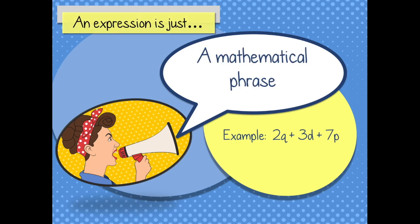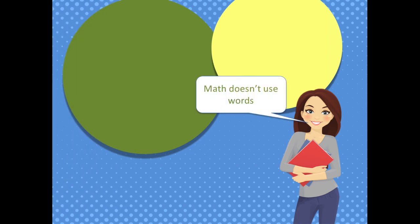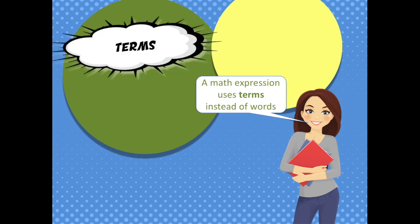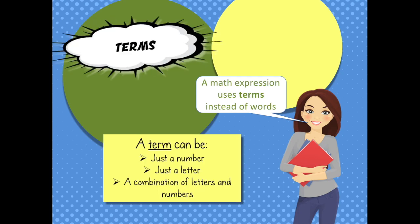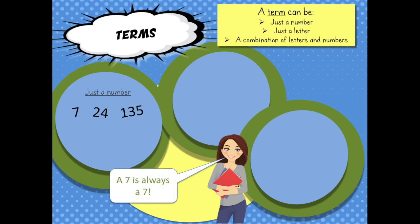In math, these shortcuts are phrases, but they don't use words like we're used to. Math phrases use terms. A term is like a math word — it can be a number, a letter, or a combination of the two. A term can be just a number, like 7, or 24, or 135. And those are easy because they never change — a seven is always a seven. Because they never change, those are called constants.